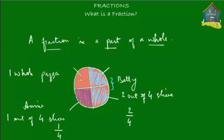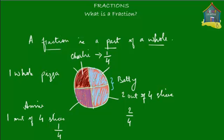Let's give the last slice to Charlie. We color it brown and give that brown slice to Charlie. Charlie got one out of four slices, so his fraction of the pizza is one fourth. So: Annie got one out of four slices — fraction is one upon four. Betty got two out of four — fraction is two over four. And Charlie got one out of four — fraction is one over four.